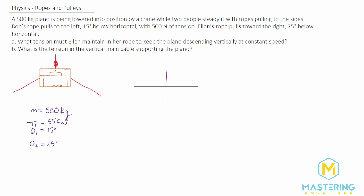On the free body diagram, we label the vertical rope T3 — that's what we'll find for part B. Then we have T1 for Bob's rope, angled 15 degrees below the horizontal, and Ellen's rope at 25 degrees below the horizontal, giving us theta 1 and theta 2. We also have the weight of the piano coming straight down. For part A, we're looking for tension T2 in Ellen's rope.